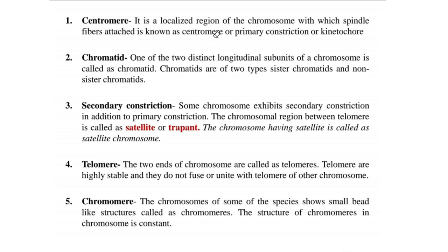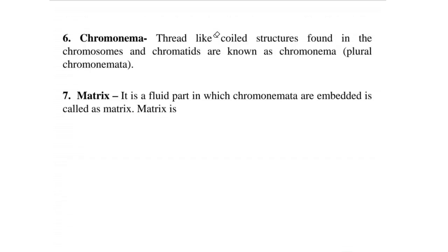Chromomere: chromosomes of some species show small bead-like structures called chromomeres, also called chamomeres. Chromonema refers to thread-like coiled structures present within chromatids, also called chromonemata. Matrix is the fluid part in which the chromonemata are embedded.